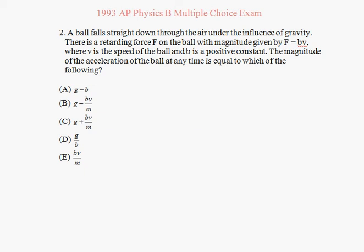Question number 2 from 1993 AP Physics B Multiple Choice Exam. A ball falls straight down through the air under the influence of gravity. There is a retarding force F on the ball with magnitude given by F equals BV, where V is the speed of the ball and B is a positive constant. The magnitude of the acceleration of the ball at any time is equal to which of the following? They are asking for the acceleration of the ball.